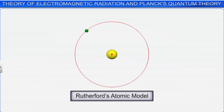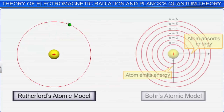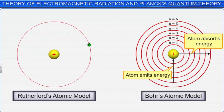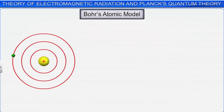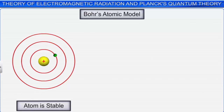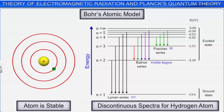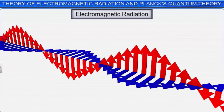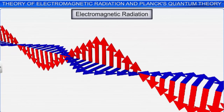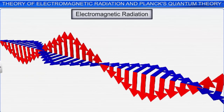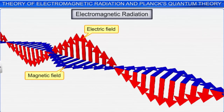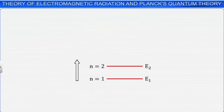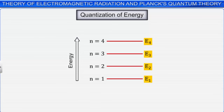The improvised outcome of Rutherford's atomic model is Bohr's atomic model. Bohr's theory could successfully explain the stability of an atom as well as the discontinuous spectra for hydrogen atom. To understand Bohr's atomic model, it is necessary to first acquaint ourselves with the nature of electromagnetic radiations. The underlying principle behind Bohr's atomic model is the quantization of energy, which is explained in the latter part of our discussion.